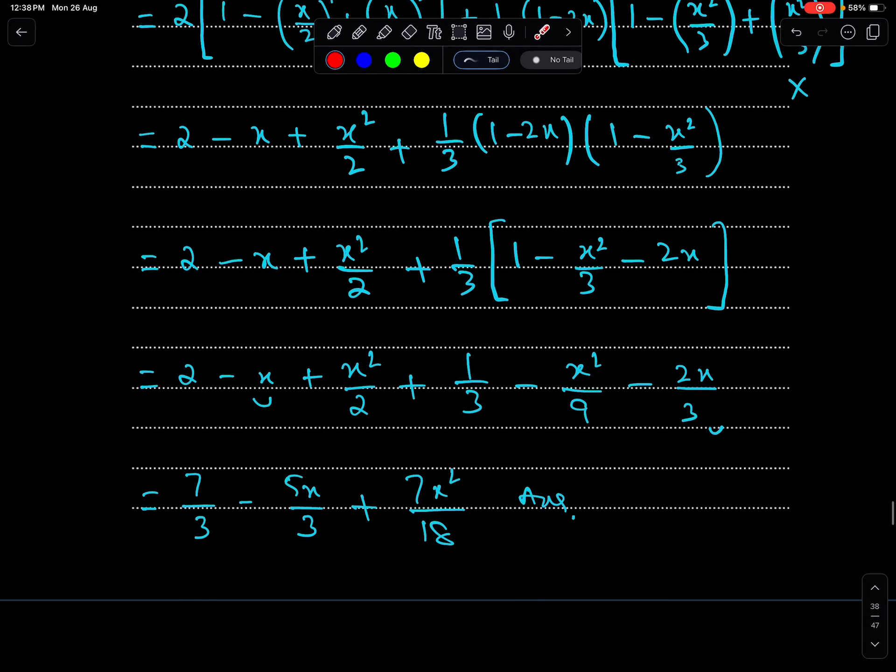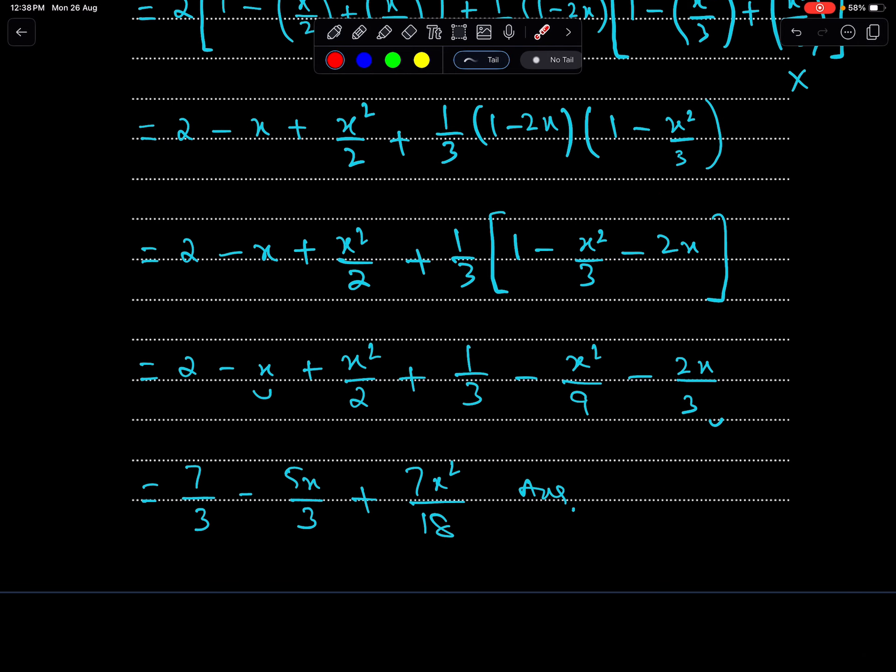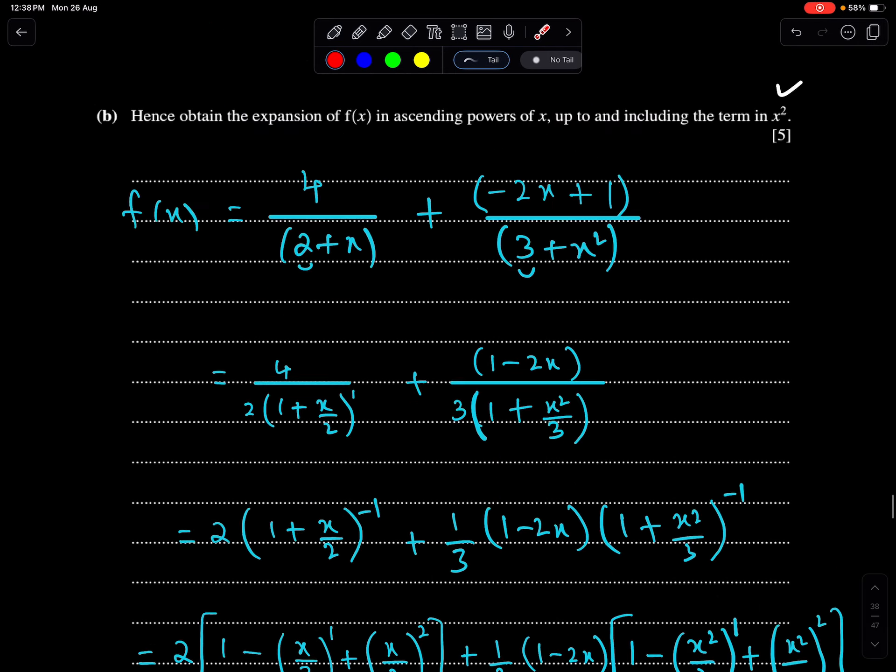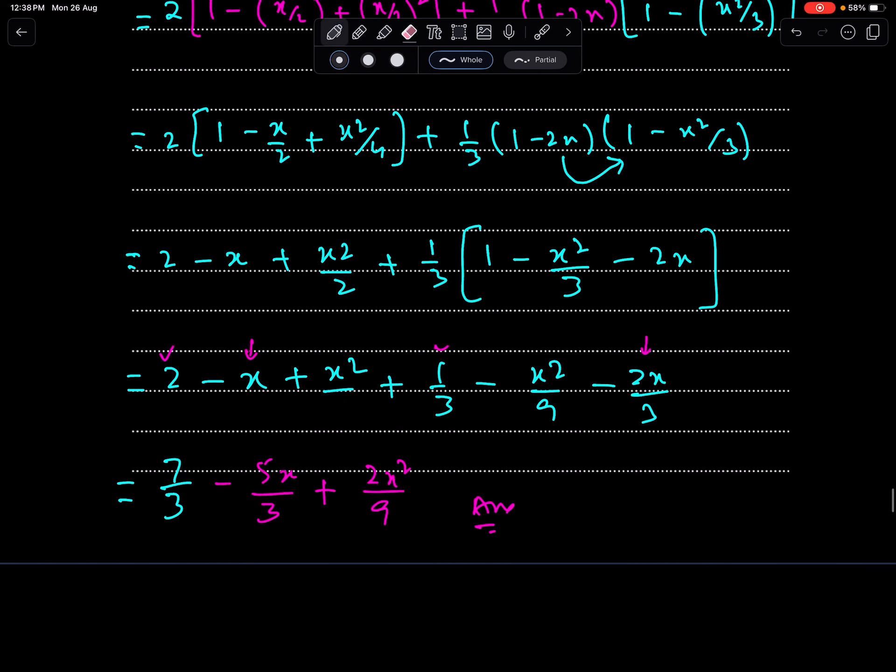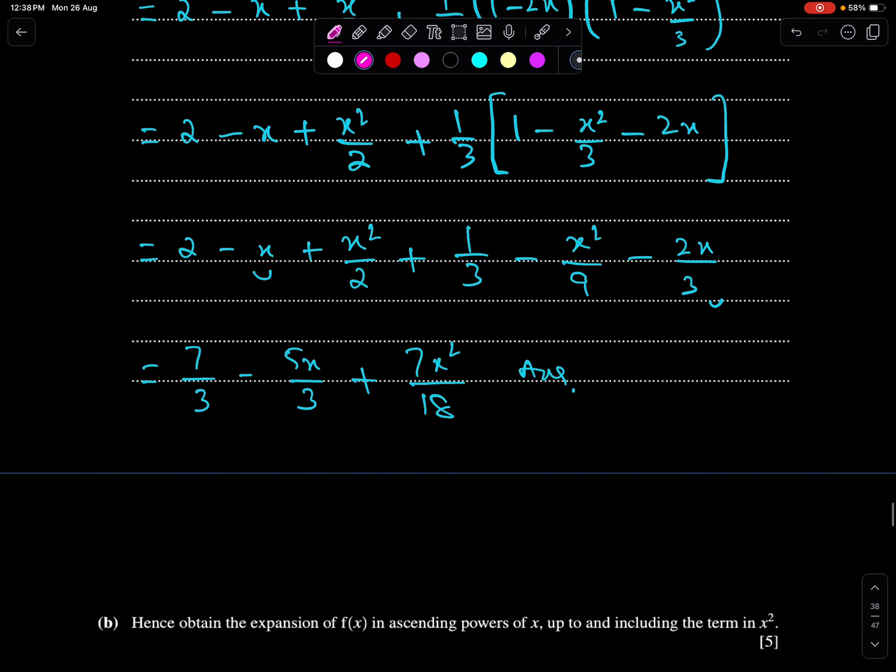Let me check this. Oh, this is 2. I wrongly wrote this 3. This is 2, so this is 18. So, it's 7x square upon 18. Yeah, it's right.